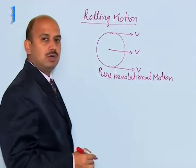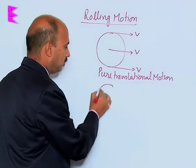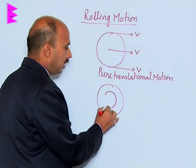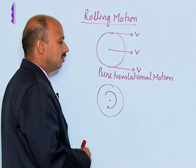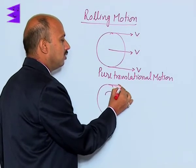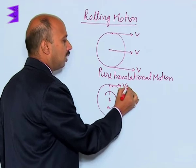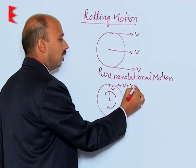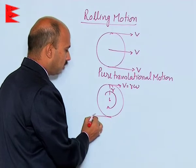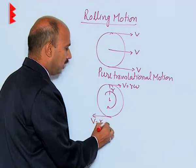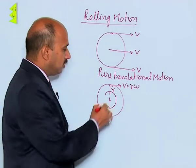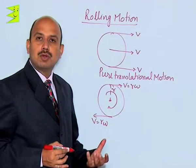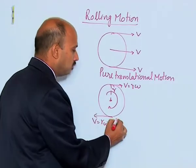Now, if you take the same disc here and it is rotating about a fixed axis, then it has got velocity V equal to r omega. Here the velocity V is equal to r omega, and it is spinning about this axis — that is an example of pure rotational motion.